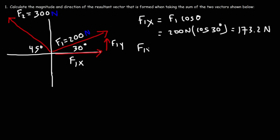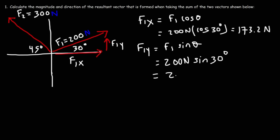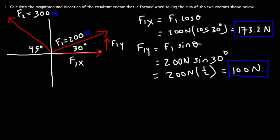Now let's do the same thing with the y component of F1. That's going to be F1 times sine of theta. F1 is 200, times sine of 30 degrees. Sine of 30 degrees is 1/2, so if we multiply 200 by 1/2, half of 200 is 100. So here we have the x component and the y component of F1.